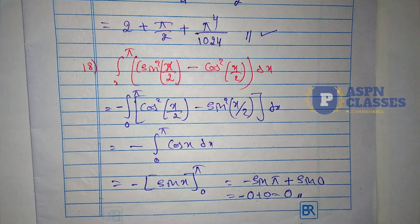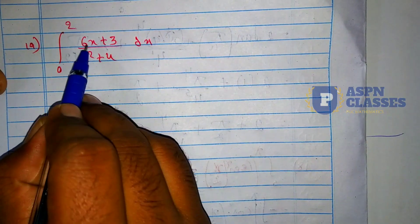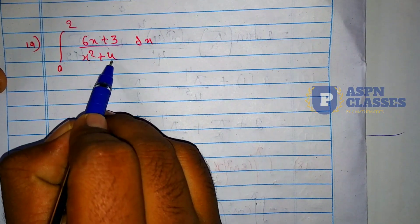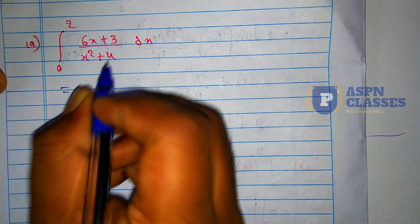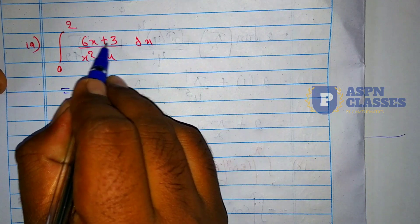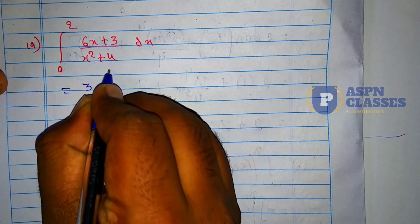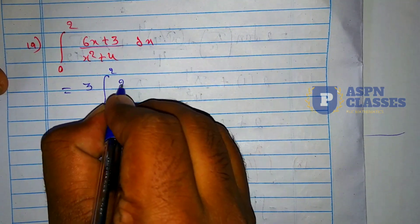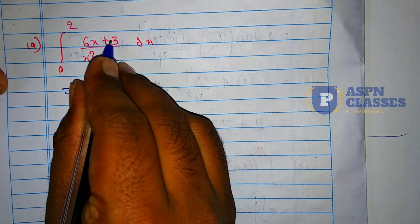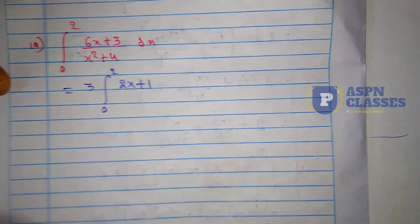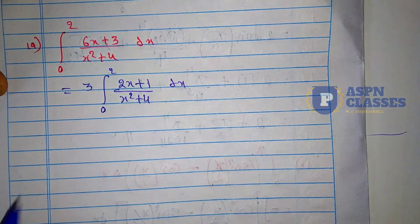Next, question number 19: integration of (6x + 3)/(x² + 4)dx with limit 0 to 2. This is a small example. We take 3 as a common factor, giving us 3·(2x + 1) in the numerator. So 3 multiplied gives 6x, and 3 multiplied by 1 gives 3. The denominator is as it is: x² + 4.